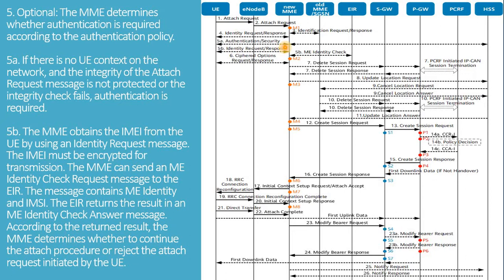The MME obtains the IMEI from the UE by using an identity request message. The IMEI must be encrypted for transmission. The MME can send an IMEI identity check request message to the IR. The message contains the IMEI identity and IMSI. The IR returns the result in an IMEI identity check answer message. According to the return result, the MME determines whether to continue the attach procedure or reject the attach request initiated by the UE.